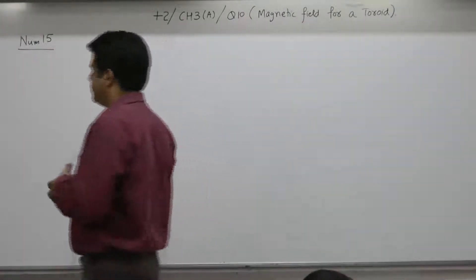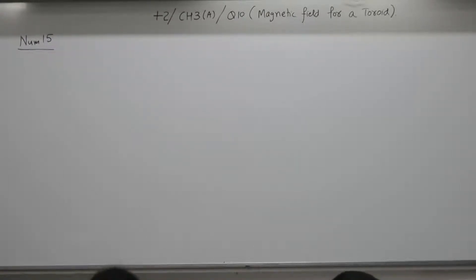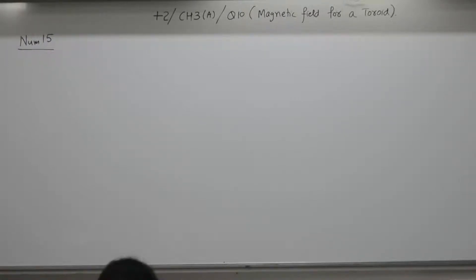Question: A solenoid of length 1 meter and diameter 3 centimeter has 5 layers of winding of 850 turns each and carries a current of 5 ampere. What is the magnetic field at the center of the solenoid? Also calculate the magnetic flux for a cross section of the solenoid at the center.